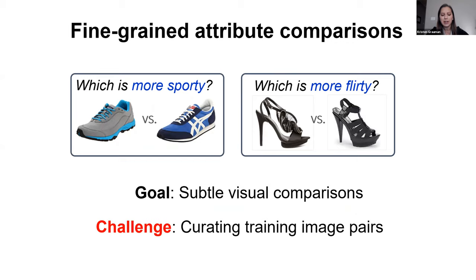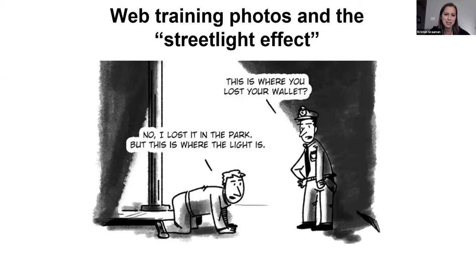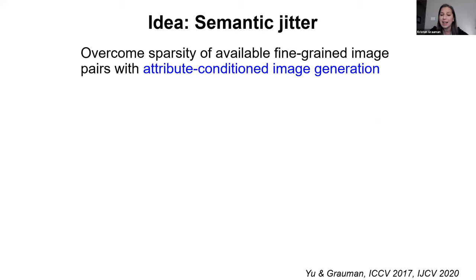At the core of that, you've got to know these slight differences and understand them in natural language. Fine-grained differences require more thoughtful training mechanisms, because subtle visual comparisons need fine-grained differences in the training data. The challenge is curating training image pairs that adequately exhibit subtle differences. If you just crawl the web for photos of black shoes and white shoes, you'll suffer from what's known as the streetlight effect — you start training systems with images you happen to find, which doesn't mean that's the concept you're trying to learn.